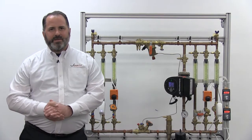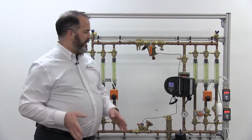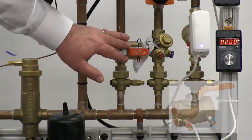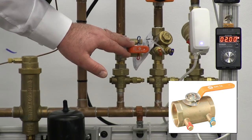Let's talk about different ways you can manually balance a system. The first way we're going to talk about is a ball valve. This is a Victaulic 78BL ball valve.